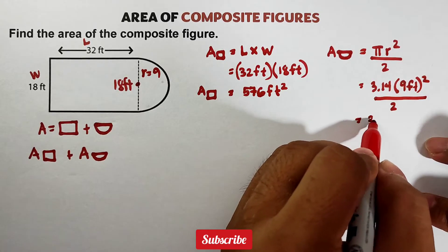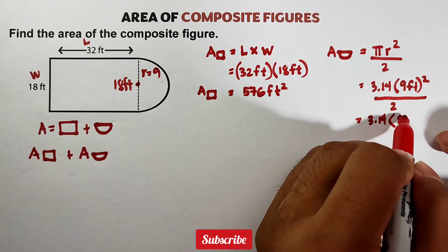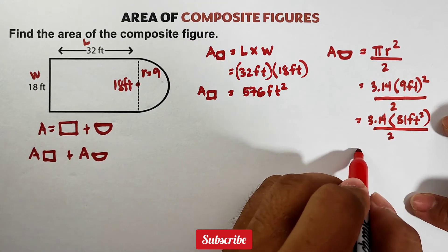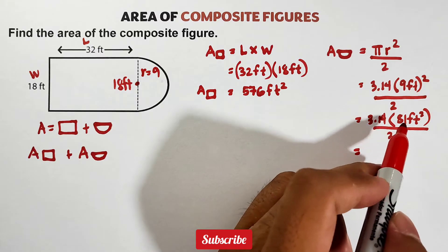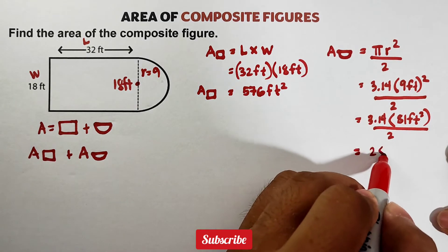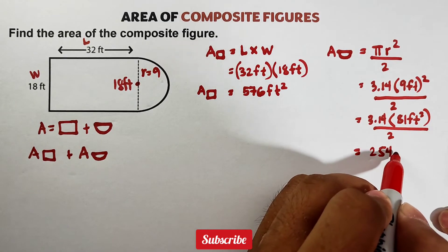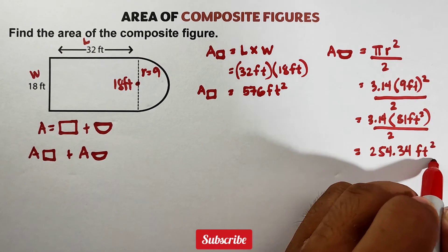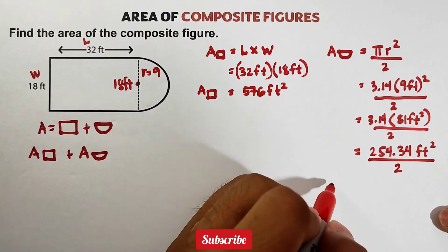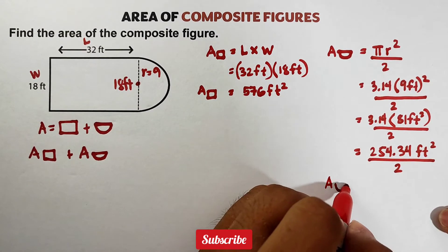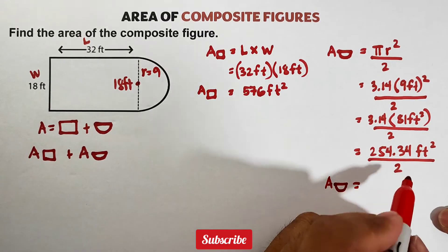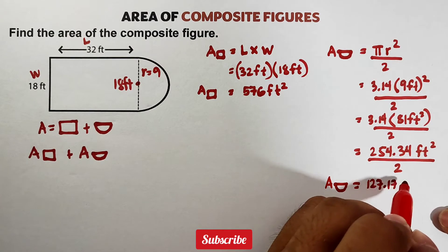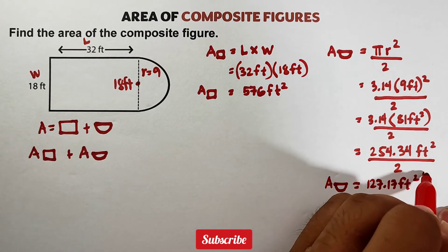So this is 9 feet squared over 2. So we need this is 3.14, times this is 81 feet squared over 2. Multiply 3.14 and 81. This will give you 254.34 feet squared, and then divided by 2. And as you can see, the area now of our semicircle, when divided by 2, is 127.17 feet squared. This is now our area.